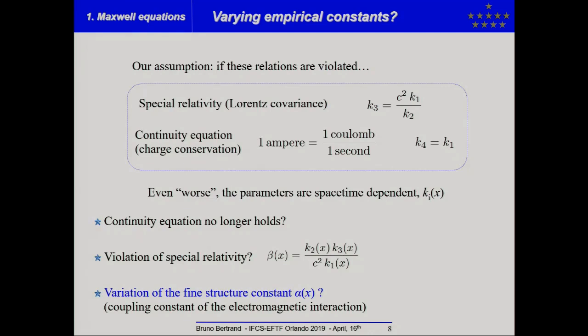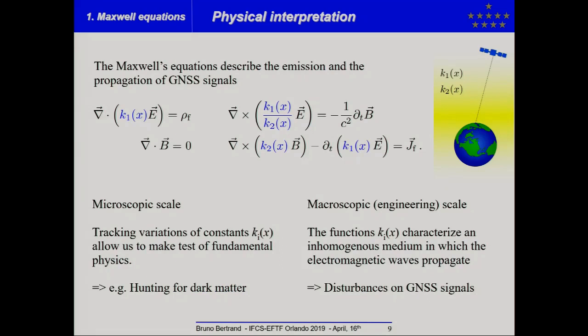And it is on that last configuration, that case we will focus on. And so, as you know, the Maxwell equation describes the emission and the propagation of GNSS signal. And, as I have just shown, if you track variation of the constant K, it allows us to make tests of fundamental physics.